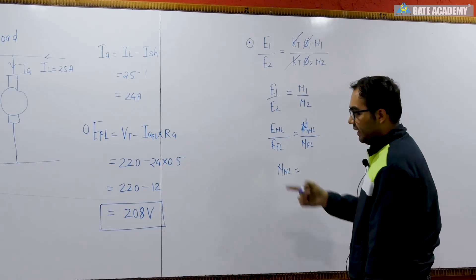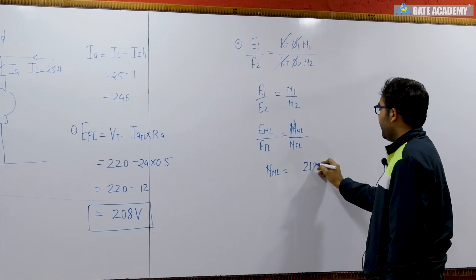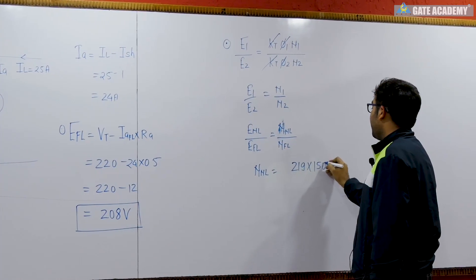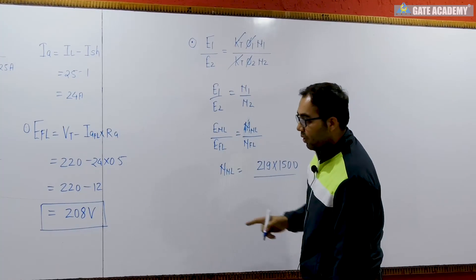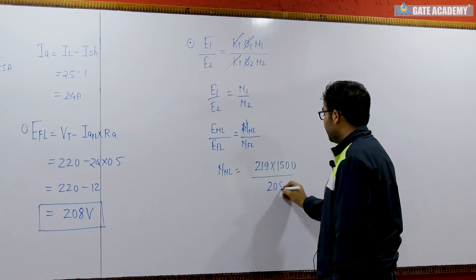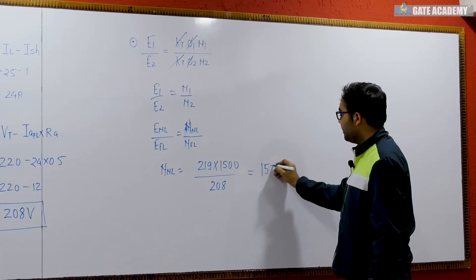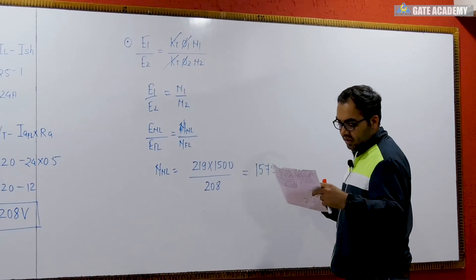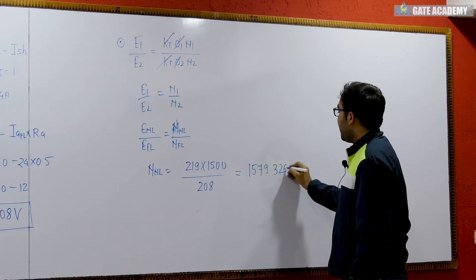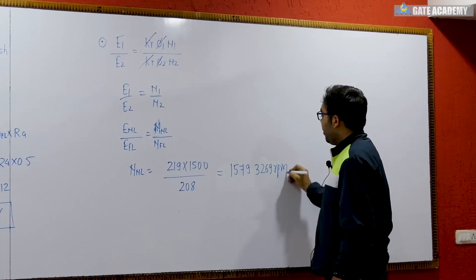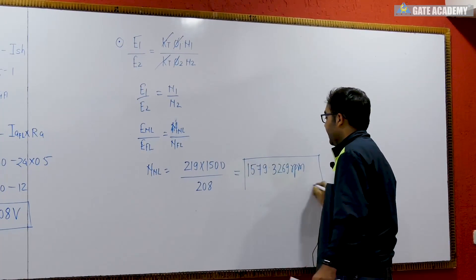So no load speed will be equal to ENL 219, full load speed is 1500 rpm, full load voltage is 208. So after solving, we are getting around 1579.3269 rpm. This is the speed of the motor under no load condition.